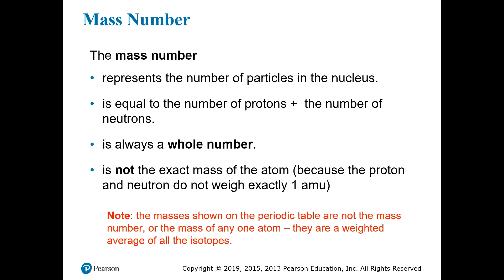Since we're just counting particles, the mass number is always a whole number — you can't have half a proton or half a neutron. It's not the exact mass of the atom because the proton and neutron do not weigh exactly one atomic mass unit, but it's very close — usually to about 0.99 or 0.98. One important thing to keep in mind is that the masses on the periodic table are not the mass number. They are a weighted average of all the different isotopes of a particular element, which we'll learn about a little bit later.